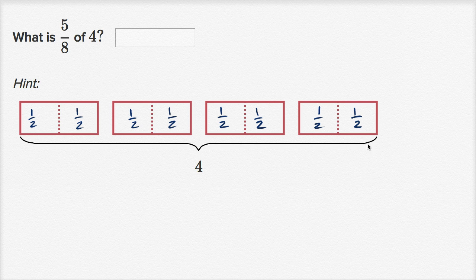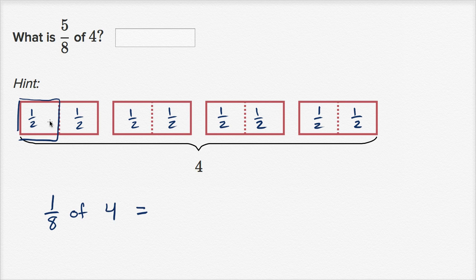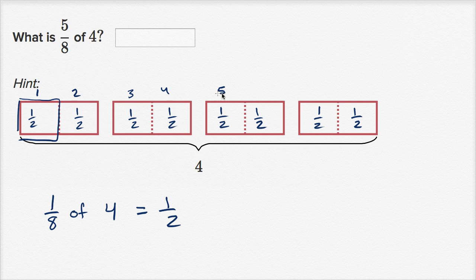If I were to take all four holes and divide them into eight equal sections, this is one of the eight equal sections — it just happens to be half of a hole. So one-eighth of four is equal to one-half. We have four holes, and if we divide that into eight equal sections, that means taking each hole and dividing it into two. So half is one-eighth of four. But they're asking us five-eighths of four.